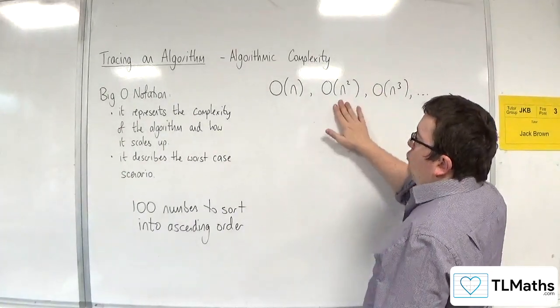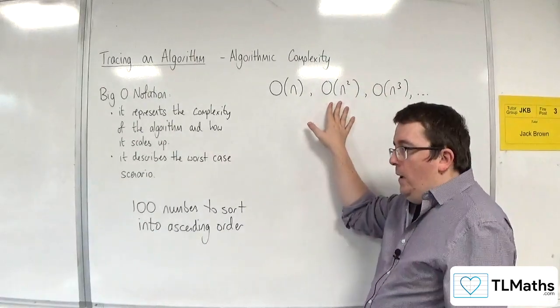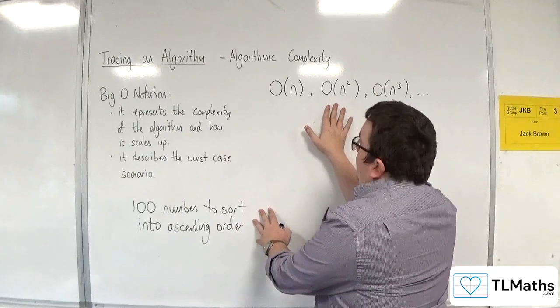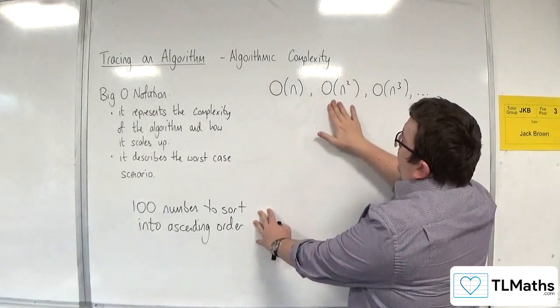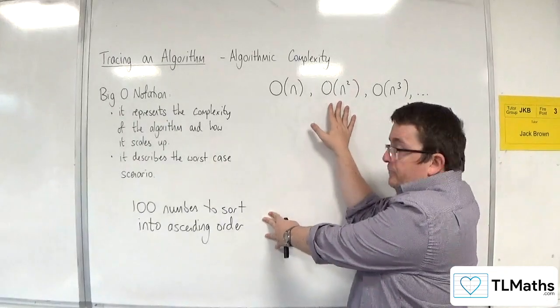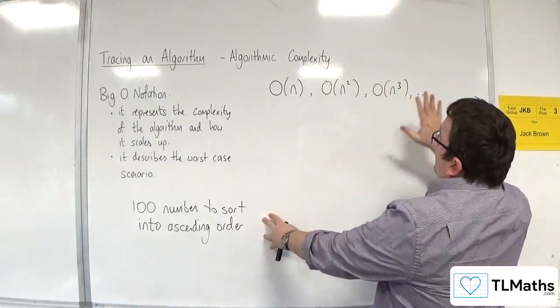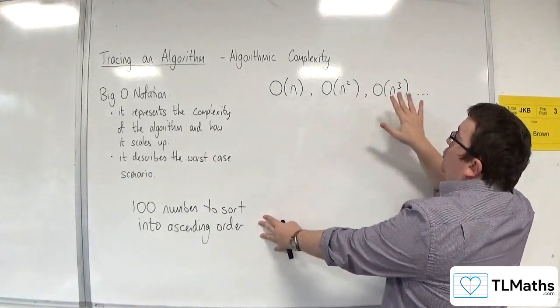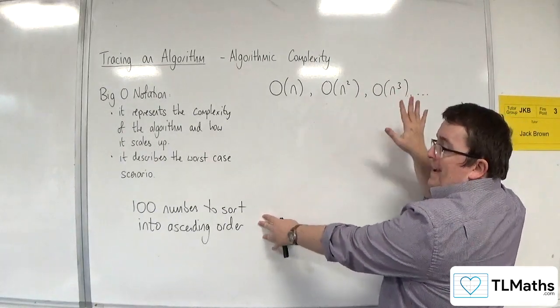However, if the algorithm you're using is order of n squared, if you've doubled the problem, then actually you're going to multiply the run time by 4, by 2 squared. And if it was order of n cubed, you would multiply your run time by 2 cubed, by 8.